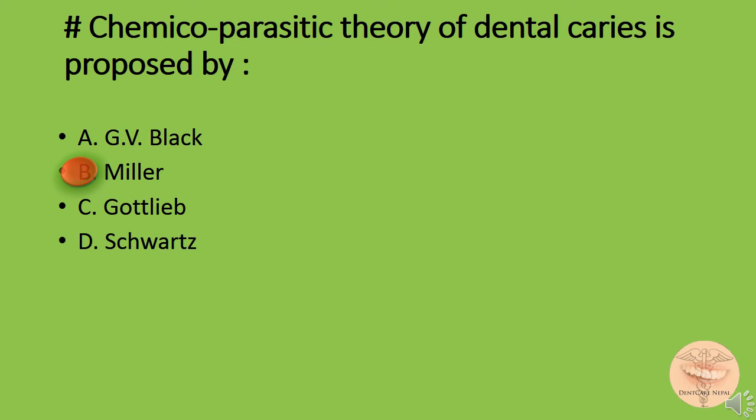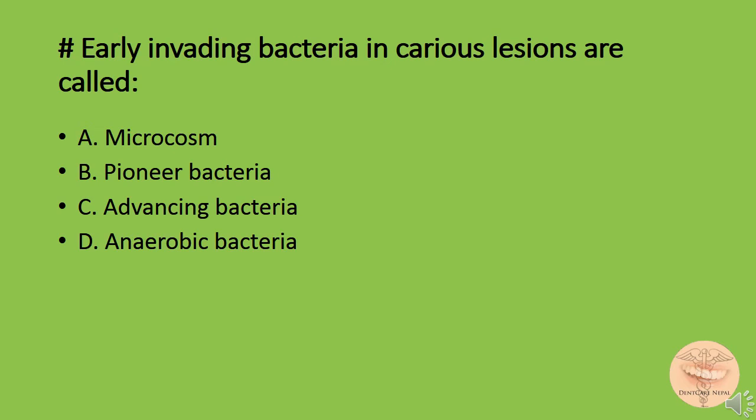The correct answer is option B: Miller. Miller proposed the chemical parasitic theory of dental caries. Bacteria only invading caries lesions are called: option A) microcosm, option B) pioneer bacteria, option C) advancing bacteria, or option D) anaerobic bacteria. The correct answer is option B: pioneer bacteria.